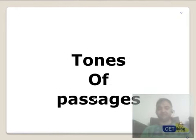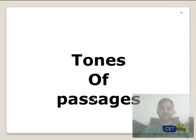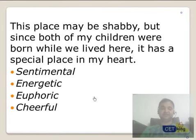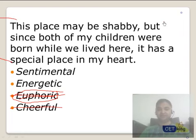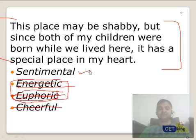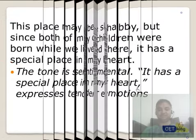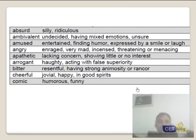Let's move to the tones of passages. My objective for the next few minutes is to walk you through all the types of tones in a passage. Pause the video and try to find out the tone here: 'This place may be shabby but since both of my children were born while we lived here, it has a special place in my heart.' Is it cheerful? No. Euphoric? Euphoric means a celebrating mode — the author is not that energetic. But yes, the author is sentimental, because he used the phrase 'special place in my heart.'